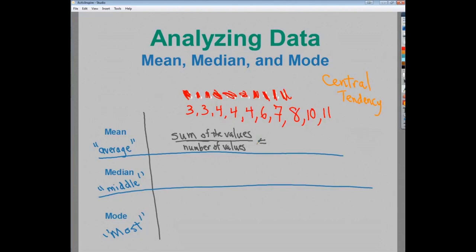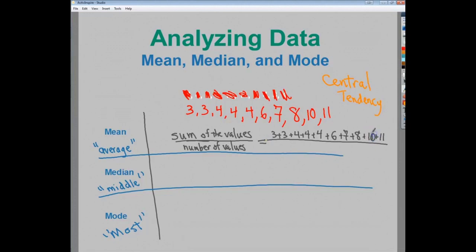Really, what you're dealing with is the sum of the values — add them all up — and then divide by how many there are, the number of values. Sum over how many. So if I do 3 + 3 + 4 + 4 + 4 + 6 + 7 + 8 + 10 + 11, make sure you have everything right. Go back through and look at them. I know there are 10 of them, which is helpful for the denominator — the number of values is 10.